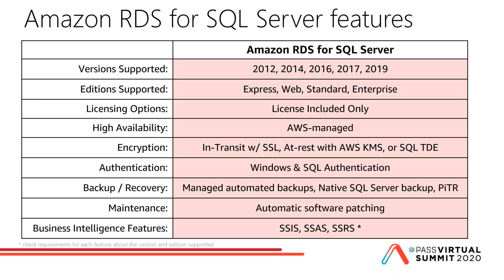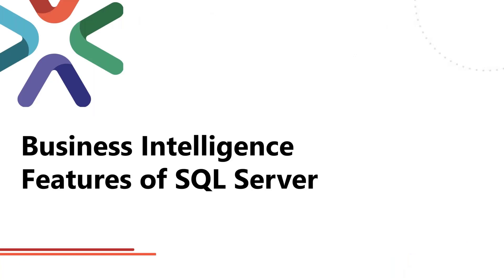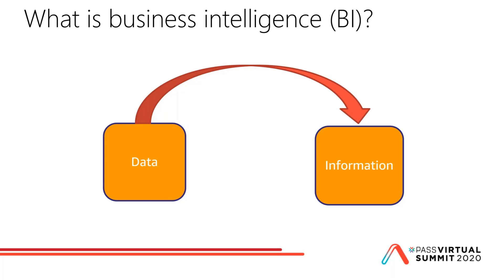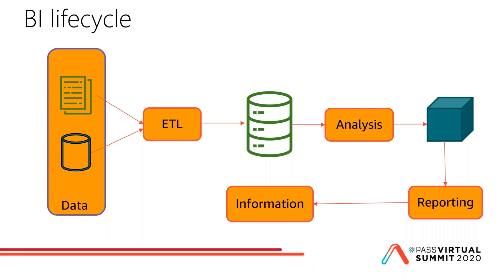The new thing we've added this year that we wanted to talk about here at PaaS is the BI features — integration services, analysis services, and reporting services have been added as capabilities in the RDS platform. BI is nothing more than taking data and turning it into information. The BI capabilities of SQL Server — IS, AS, and RS — are about taking that a step further and giving us additional options to get that data and turn it into information.